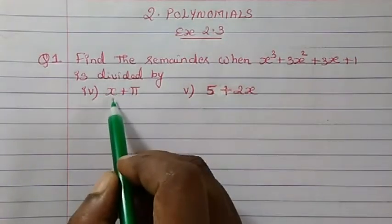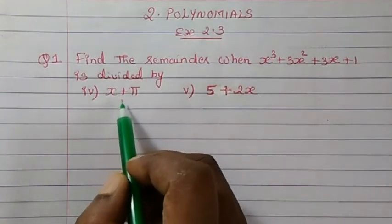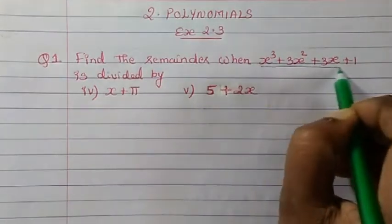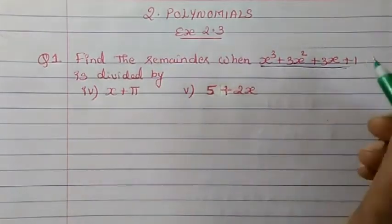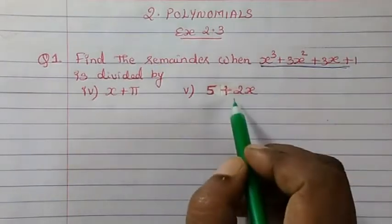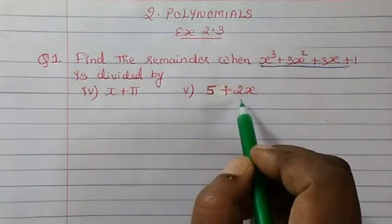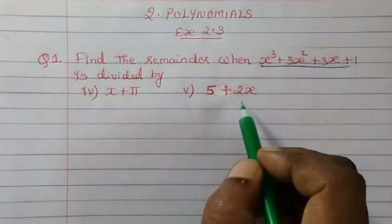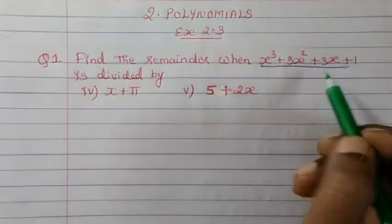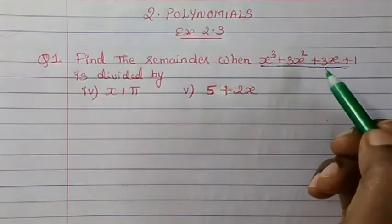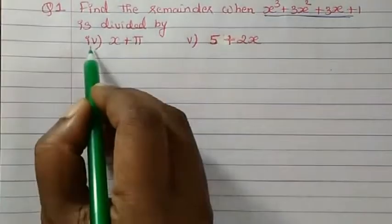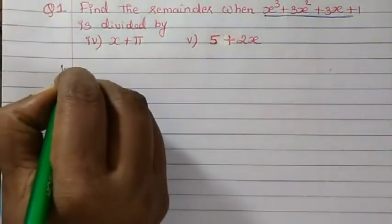If you have seen the previous part, this is very easy. We have to just get the x value and place that value wherever x appears in the polynomial, and then get the remainder. Same way here also we have to find the x value, apply it, and get the remainder. So let's begin now for the 4th one.